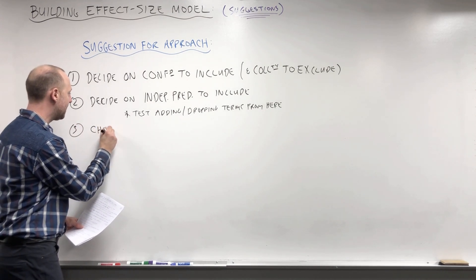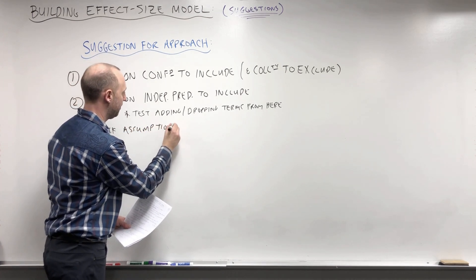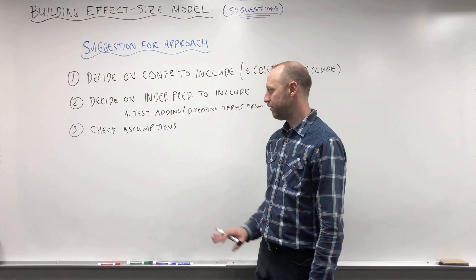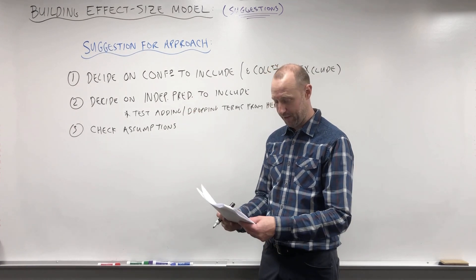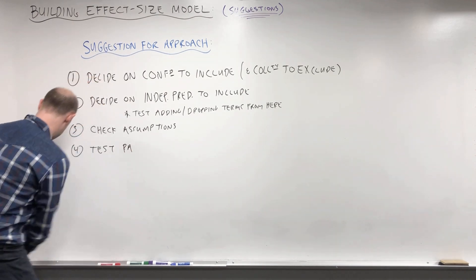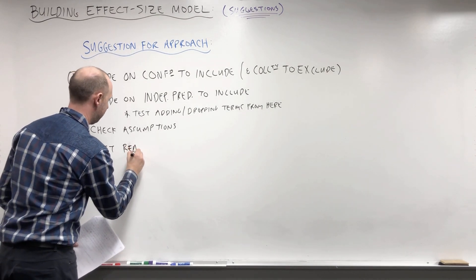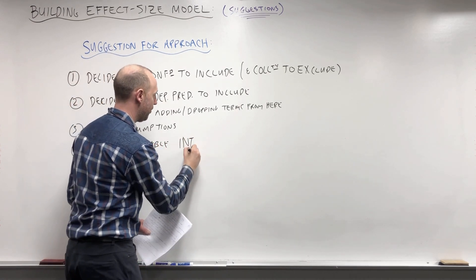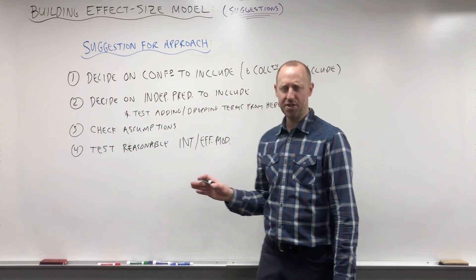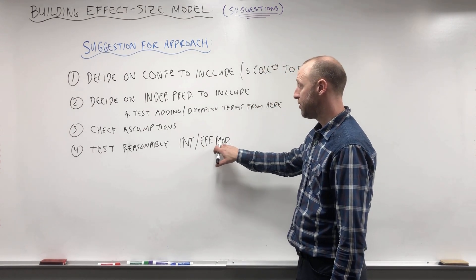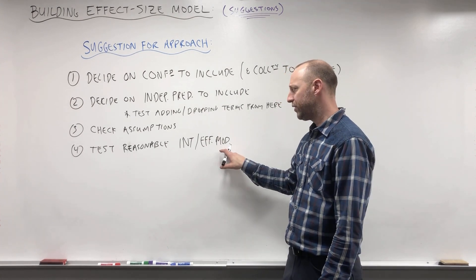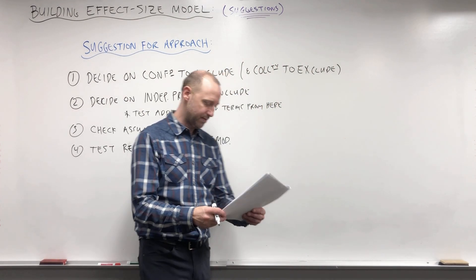At this point, it's good to check the assumptions — particularly linearity, making sure the relationship between the variables in the model and the outcome is linear. Then test any reasonable interactions or effect modification terms. Anything biologically plausible or conceptually sound can be tested. Remember, there may be variables not included as confounders or independent predictors that you think might be effect modifiers.